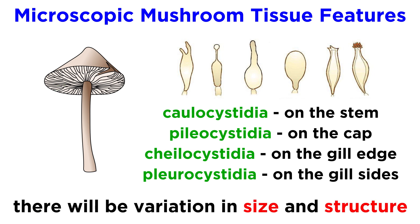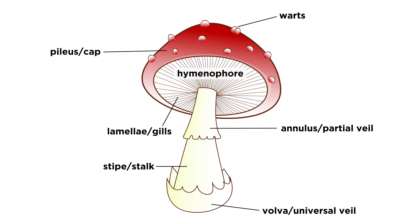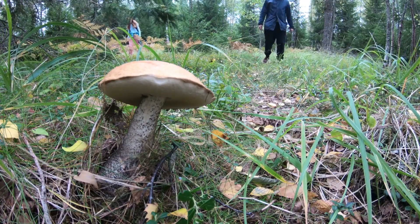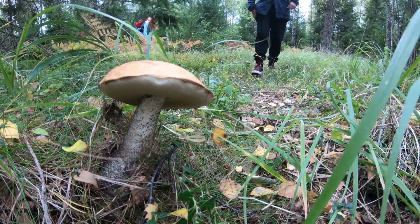Mushrooms will exhibit variation in the size and structure of each type, so mycologists can use this variation in each of these microscopic features to ensure taxonomic classification. And with that, we've covered a substantial list of terminology associated with the structural features of mushrooms, which we will continue to refer to as we move forward with the series, and will be of tremendous use to anyone who wishes to identify mushrooms in the wild.